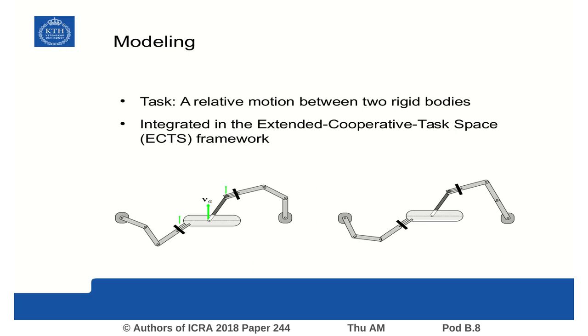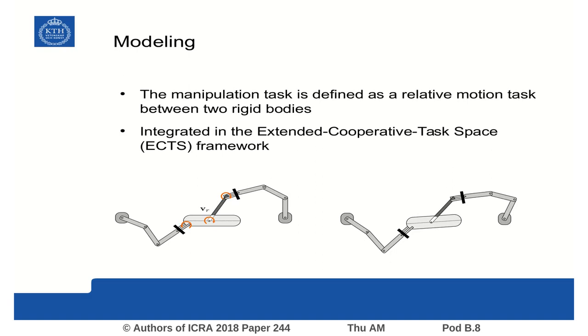Furthermore, it allows the user to choose the degree of contribution of each manipulator to the relative motion task. The absolute motion task consists of the motion of the two manipulators along the same directions, while the relative motion task is defined as the difference in motion of the two manipulators and effectors. Our manipulation task is defined in this space.